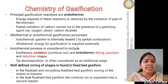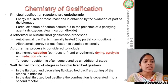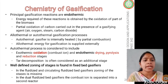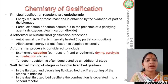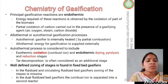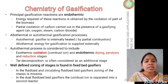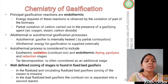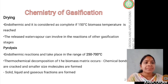Well-defined zoning of stages is found in fixed bed gasifiers, which have four zones: drying, pyrolysis, oxidation, and reduction. In fluidized bed and circulating fluidized bed gasifiers, some stage zones are missing. Similarly, in dual fluidized bed gasifiers, the combustion is separated into a second reactor.